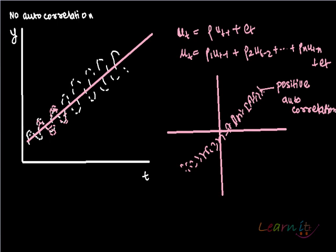The error could be even like this where they are falling over time. This is like negative autocorrelation.